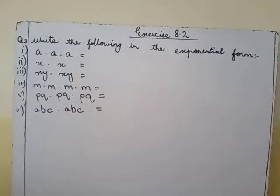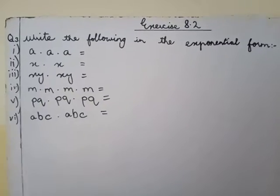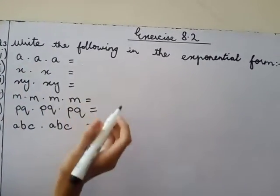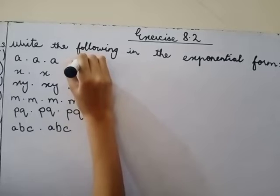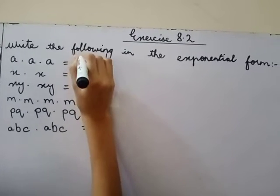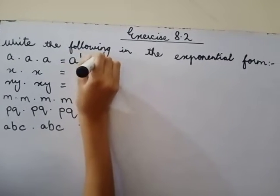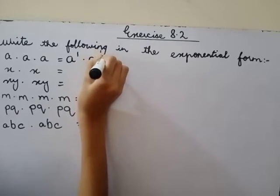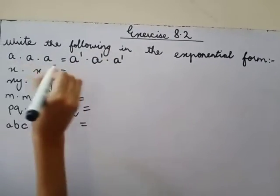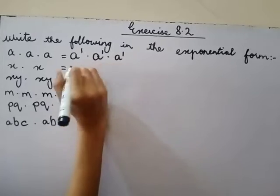So now we are going to see the first part. a point a point a. So here, we are going to write a one point a one point a. So there are 3a in this part.